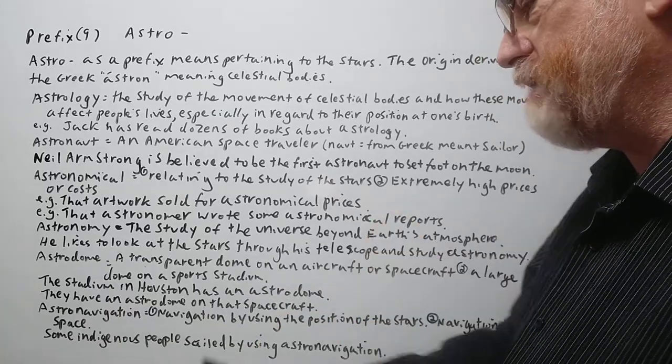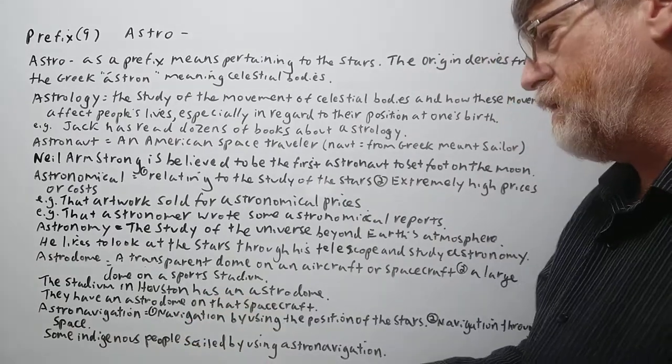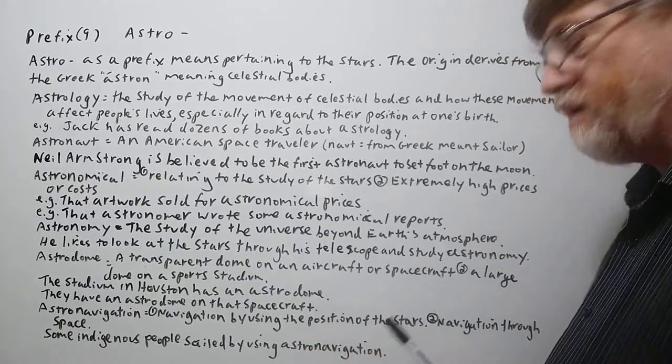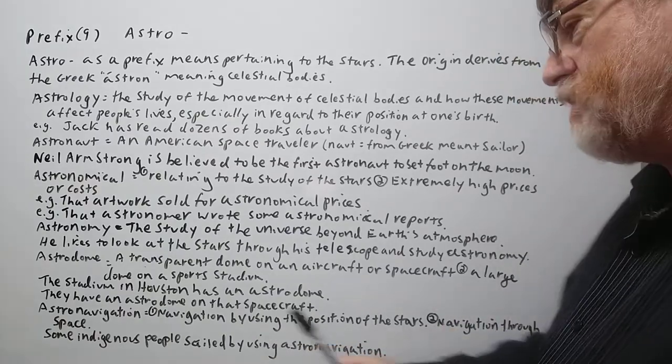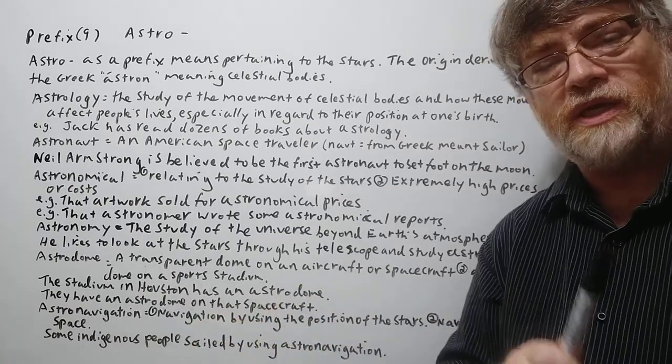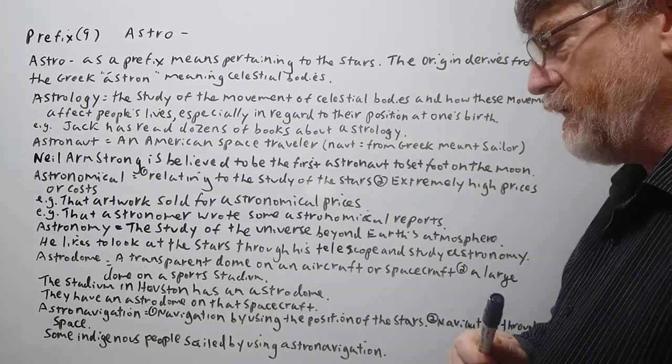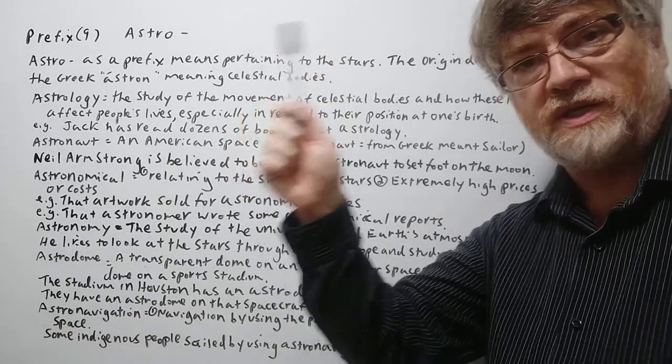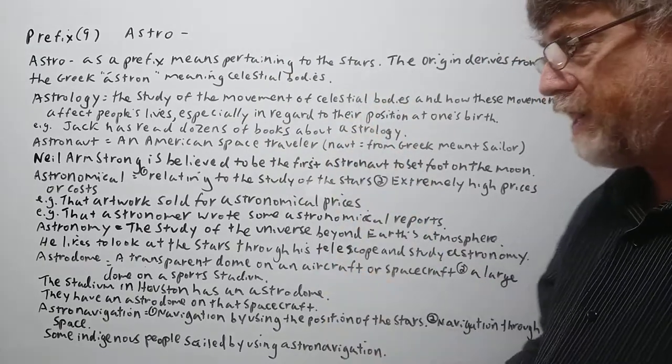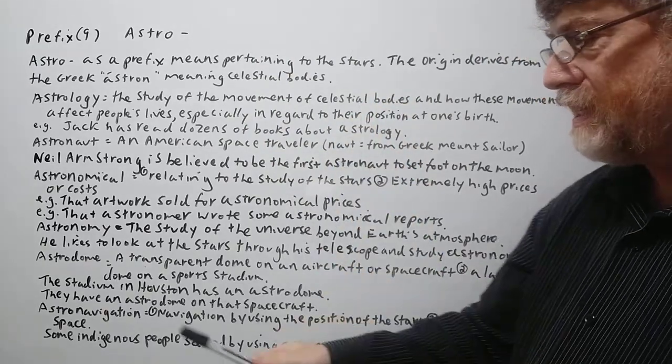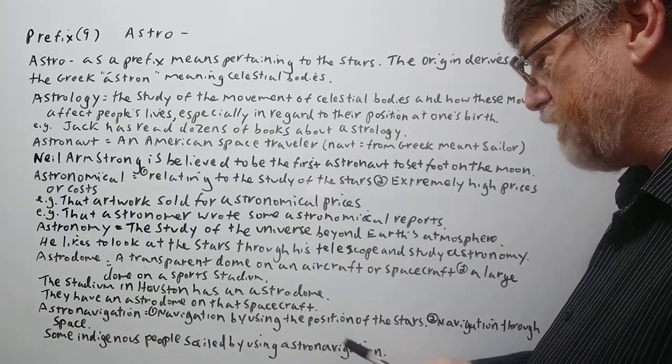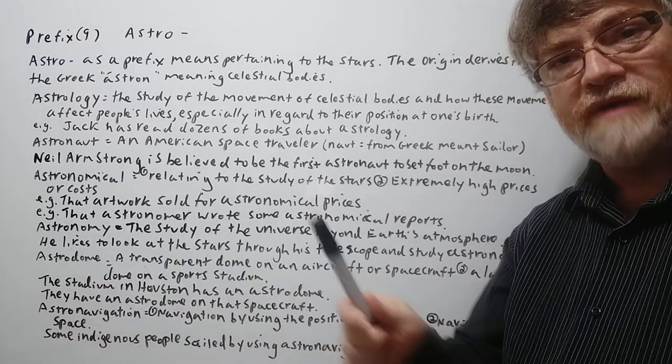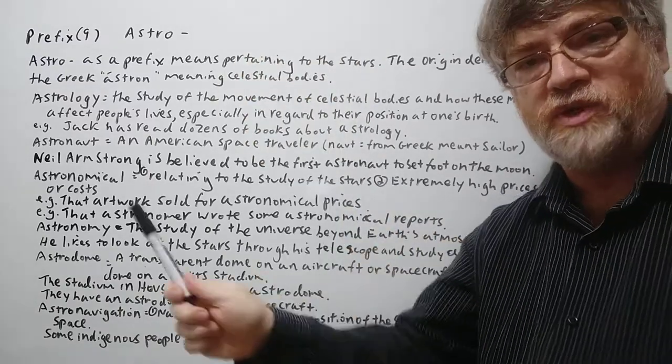And the last one we have here is astronavigation. I've heard of this before. So navigation by using the position of the stars, or navigation through space. So we can hear it used both ways. You know, before they had a compass this was one of the main ways they traveled on the sea at night. They would look at the position of the stars and figure out how to travel that way. So here's our example sentence. Some indigenous people sailed by using astronavigation. We know that there were some native people that used to travel that way. By looking at the position of the stars, they could figure out which way to sail.